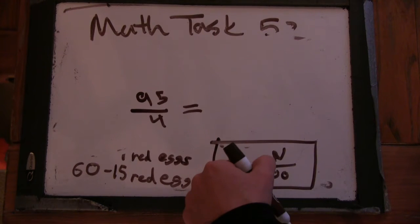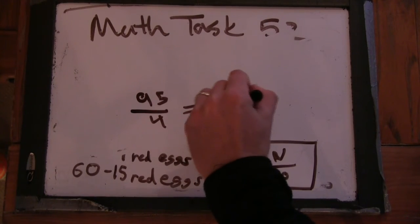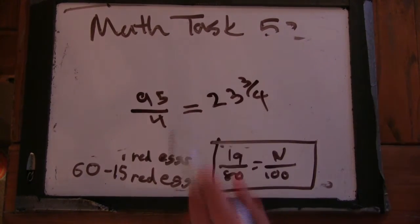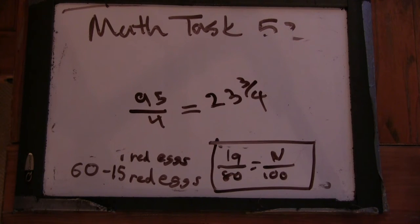That would be 23 and three fourths. There you go. 23 and three fourths. Yeah. And that's our percent. 23 and three fourths percent. 23 and three fourths percent. Pretty cool, huh? All right, now I'm going to show you a different way to do the problem. Okay.